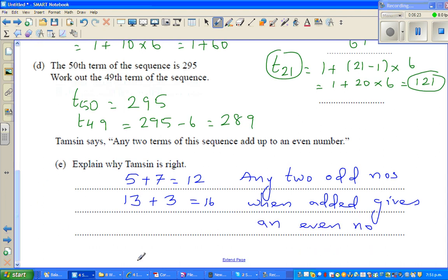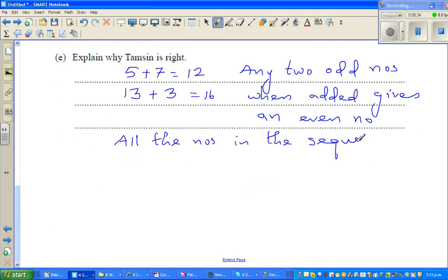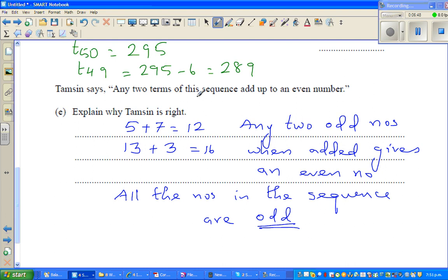And, all the numbers in the sequence are odd. This is a very interesting result, that all the numbers in the sequence are odd. So, if you add any two numbers, any two terms of the sequence, add up to an even number, because of this reason.